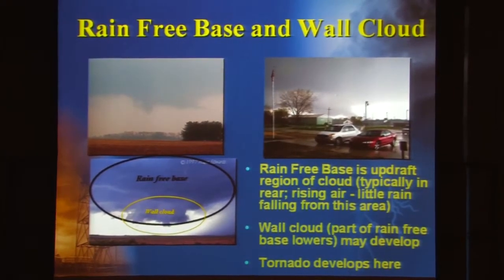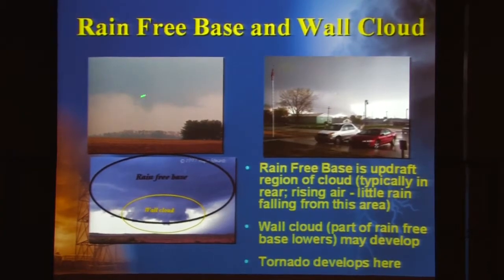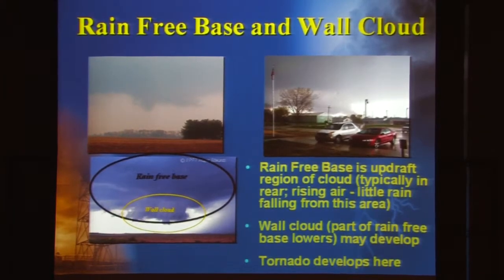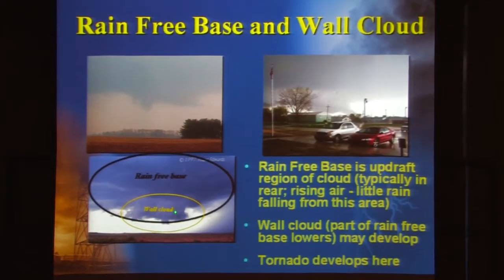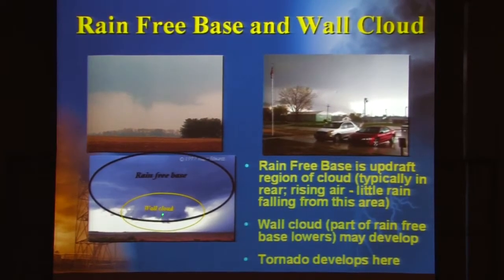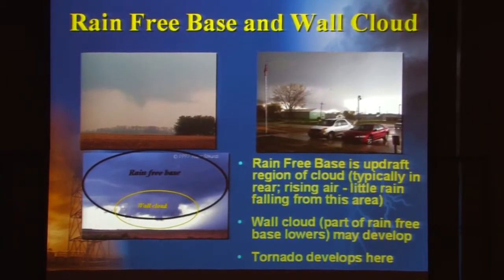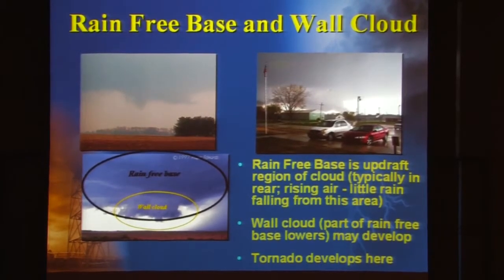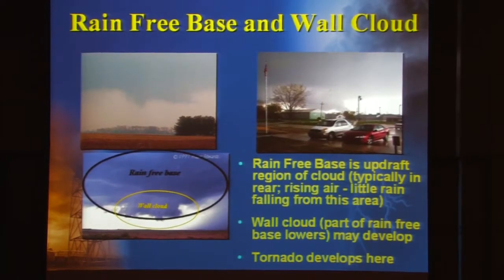A couple more examples of rain-free cloud bases and wall clouds. The upper left-hand side — the entire cloud element is rain-free updraft base, and this segment hanging down is the beginning of the wall cloud. On the lower left in the black circle, your rain-free cloud base, with the element a little lower being your developing wall cloud. In the upper right, the entire cloud structure is rain-free updraft base, and this segment to the right of the tree is your lowered cloud base or wall cloud. And right here is the tornado coming out of that particular wall cloud.